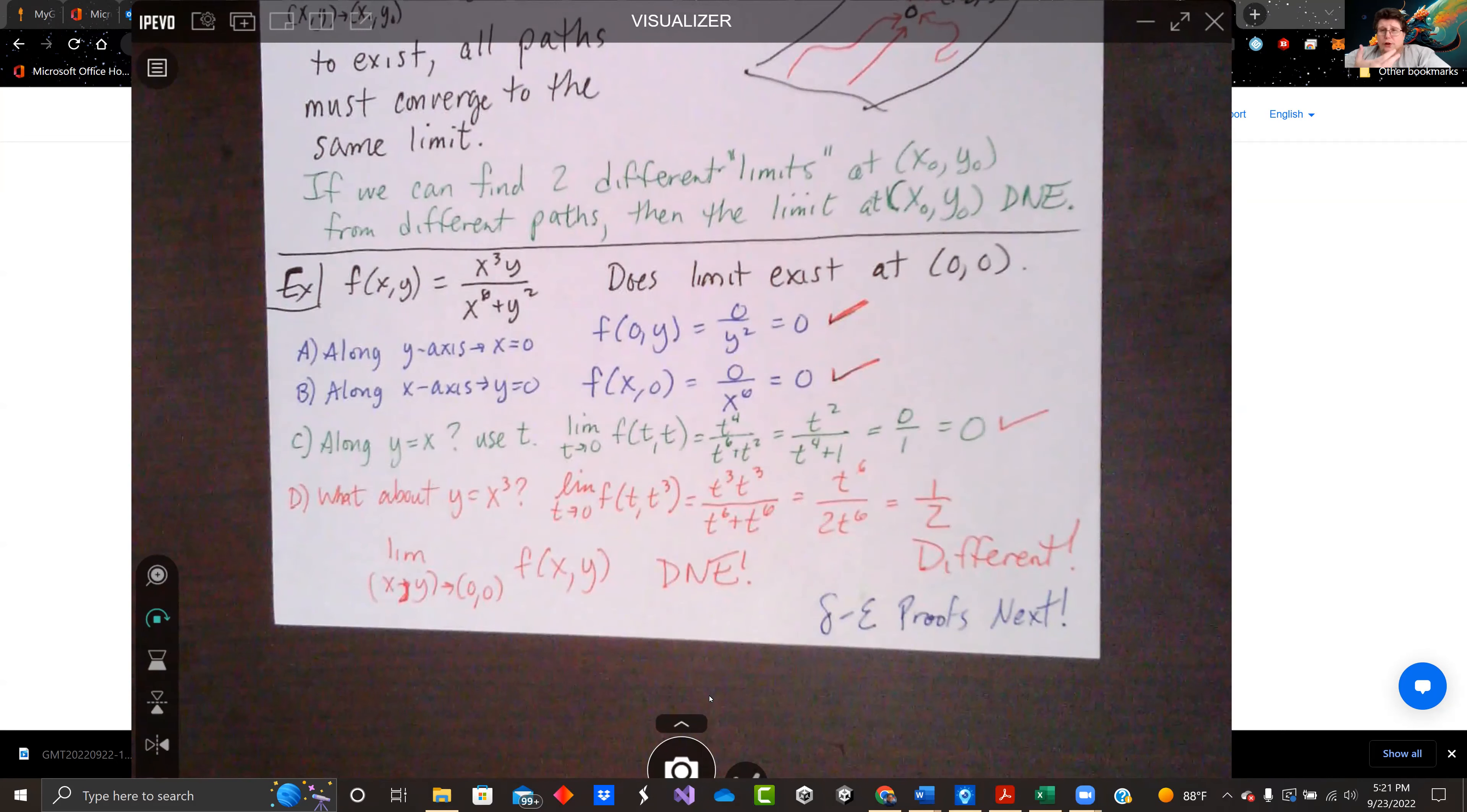We can go along the y-axis where x=0. If you plug in x=0, we've got 0/y², so it's already 0. Along the x-axis, y=0, we can plug in y=0, and we've got 0/x⁶, and that's 0 also.